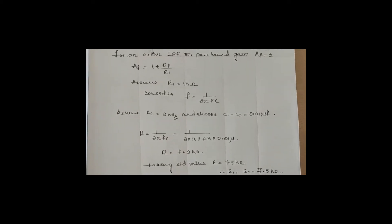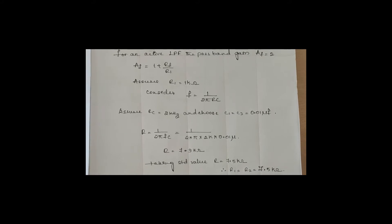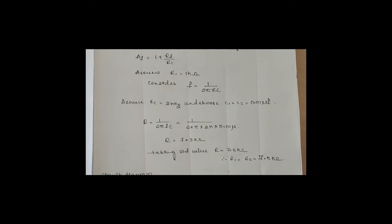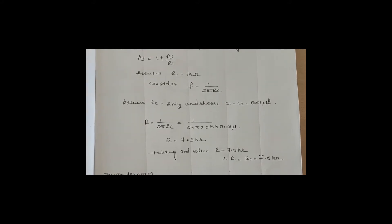For the active low-pass filter design, the passband gain AF equals 2, that is AF equals 1 plus RF divided by R1. Assuming R1 equals 1kΩ. For a second-order filter, the cutoff frequency is F equals 1 divided by 2π times the square root of R2·C2·R3·C3. Assuming R2 equals R3 equals R and C2 equals C3 equals C, this simplifies to F equals 1 divided by 2πRC.